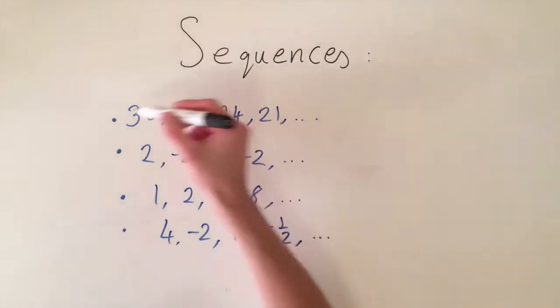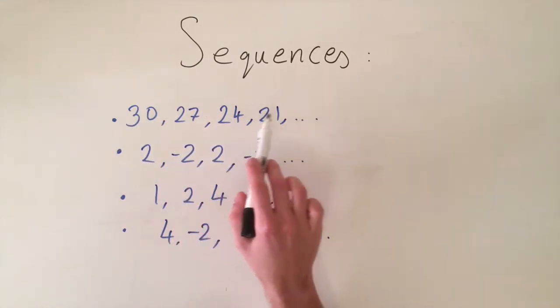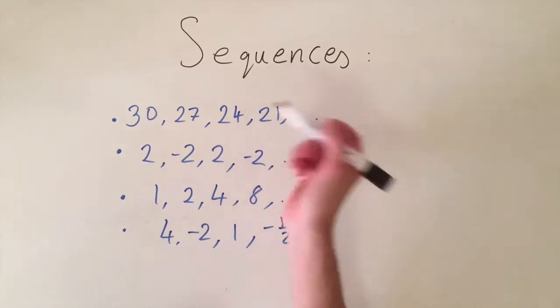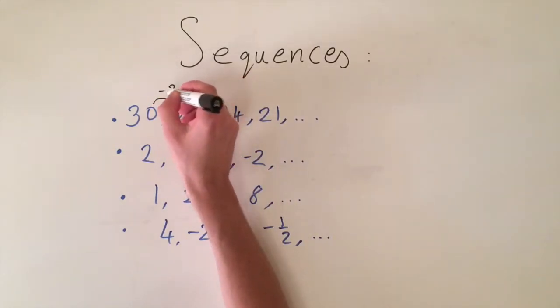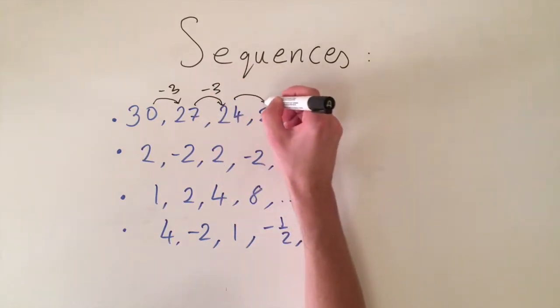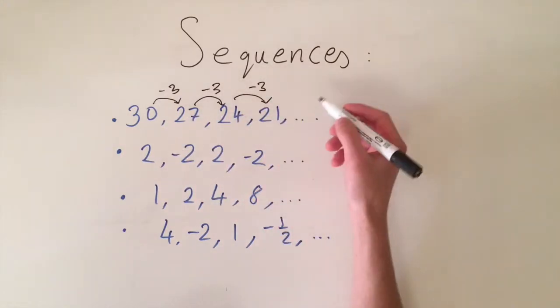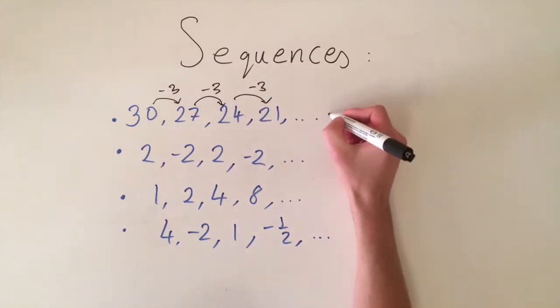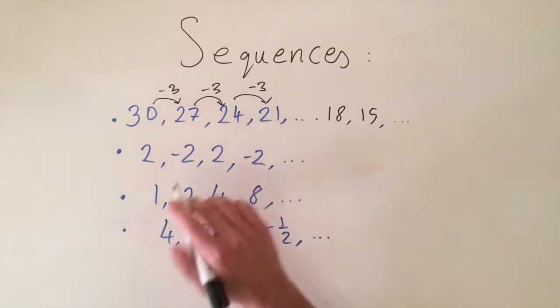So if we look at the first sequence the first term is 30 then it goes to 27, 24 and 21 and we can see just by looking at the difference between two terms we are just subtracting three of each term. So this is the rule that the numbers are following so the next terms would be 18, 15 etc. and this would carry on.